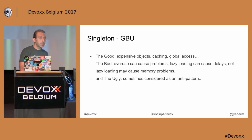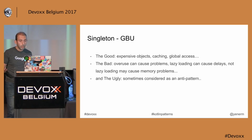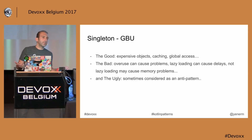The good, the bad, the ugly — this is not about Kotlin, basically about singletons. Singletons are good for expensive object caching and global access, but overuse can cause problems, especially if they're not lazy-loaded. If they are lazy-loaded they can cause delays. And the ugly part is that sometimes they are considered an anti-pattern.